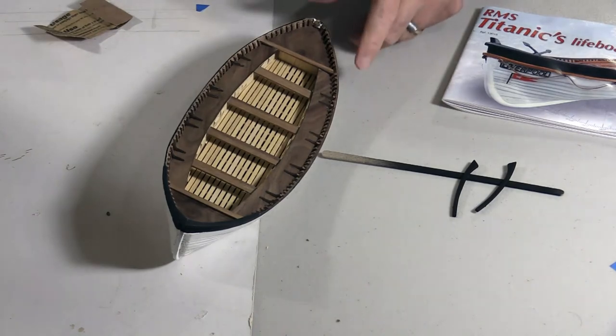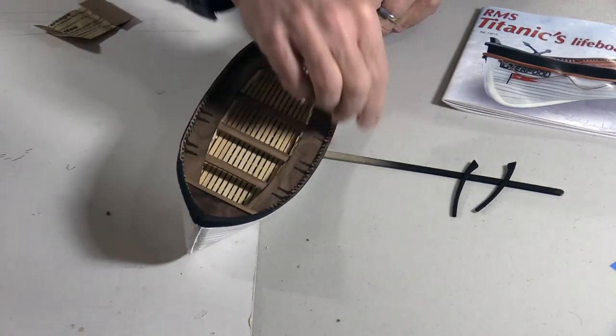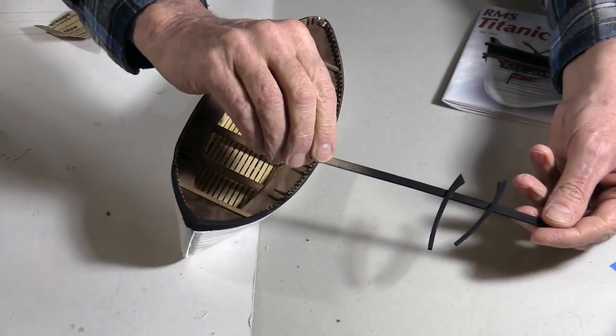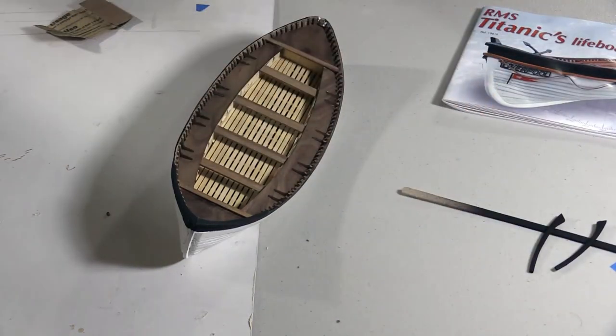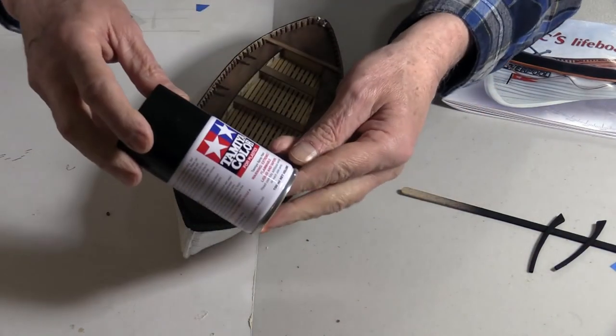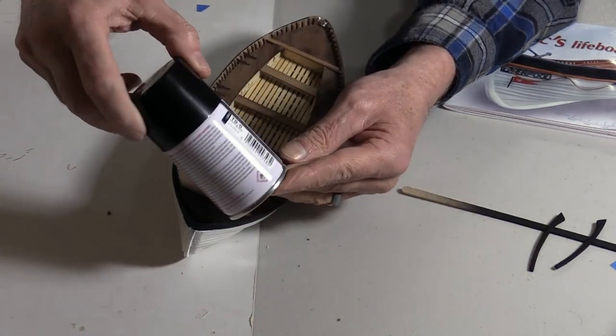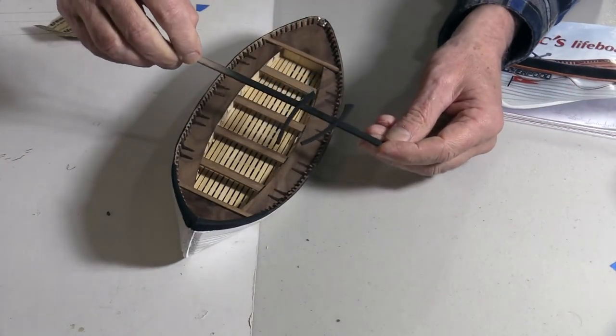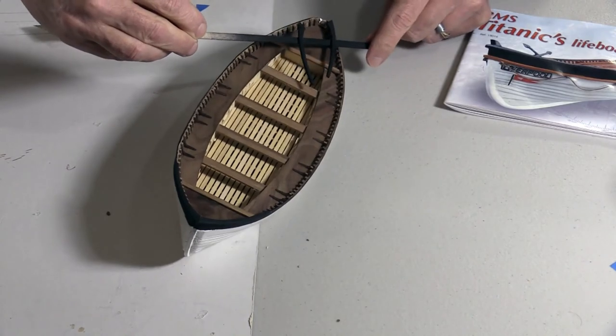Part of the process is to take these little gunwale covers and paint them first. This is what I've chosen to do. I glue them to one of my coffee stir sticks, use a spray can of flat black, that's what I've been using, and spray them first. Then break this off and I can install them on the boat.